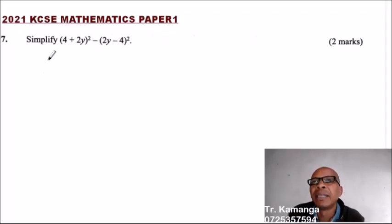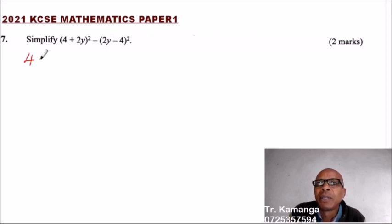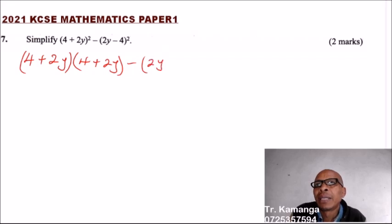Question number 7. Simplify (4 + 2y) squared minus (2y - 4) squared. You are taught how to expand factors. What you do here is write (4 + 2y)(4 + 2y) minus (2y - 4)(2y - 4). That is the meaning of the square.